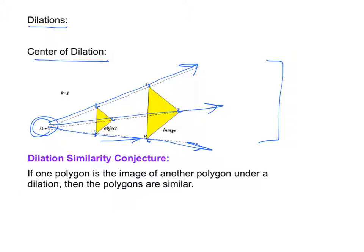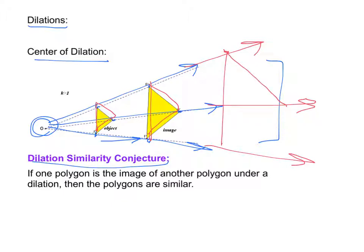And then the dilation similarity conjecture says that if one polygon is the image of another polygon under a dilation, then the polygons are similar. So you can be sure that if you have a dilation, then this figure is going to be similar to this figure. And even if we went on and continued these lines and then drew the figure again, then this figure is also going to be similar to these two other ones.